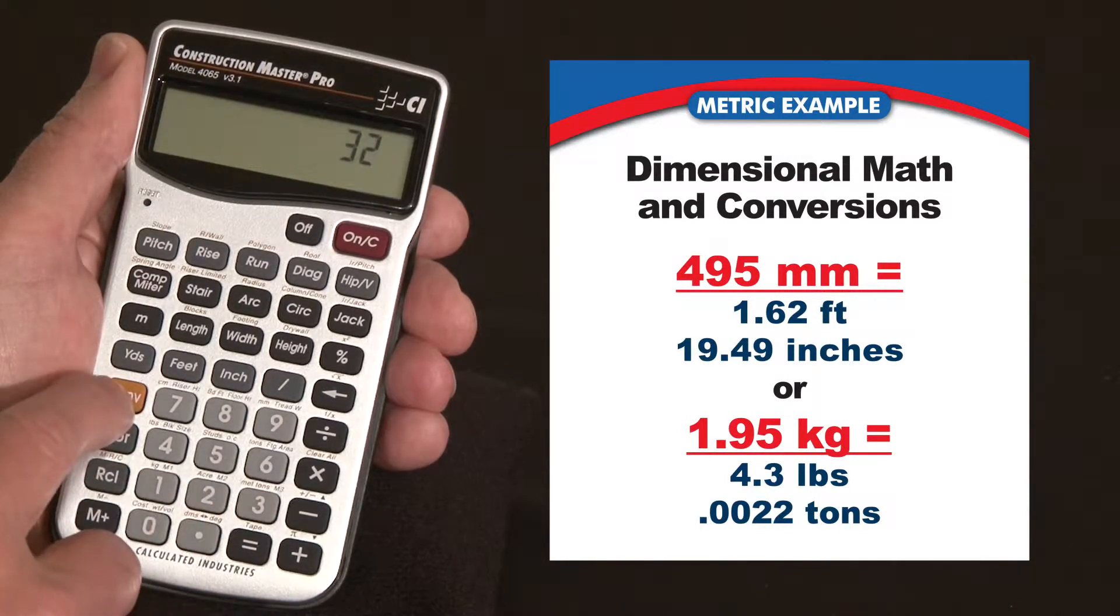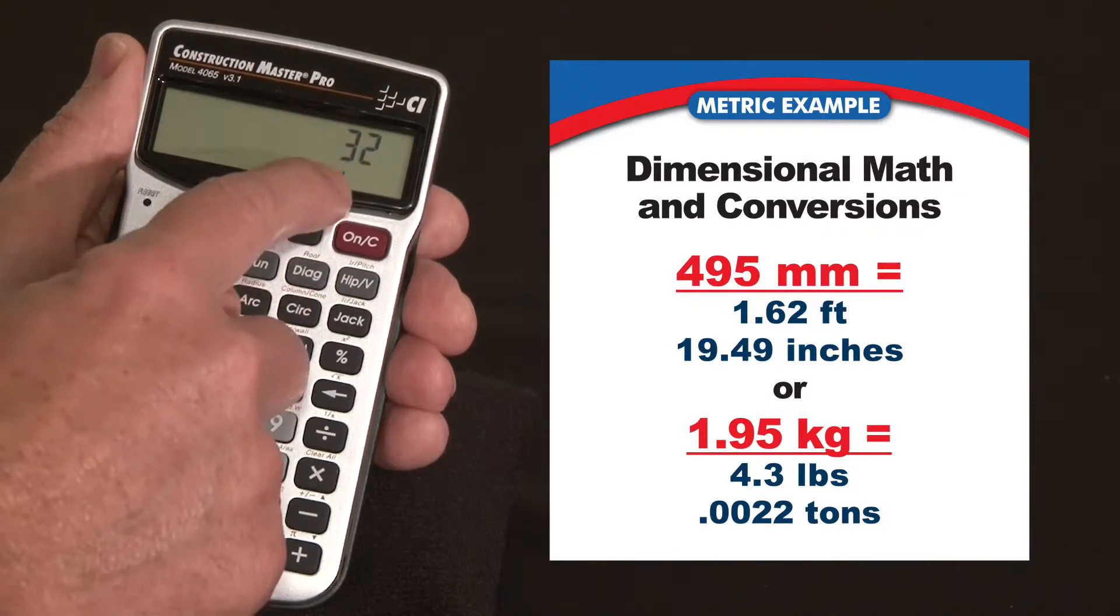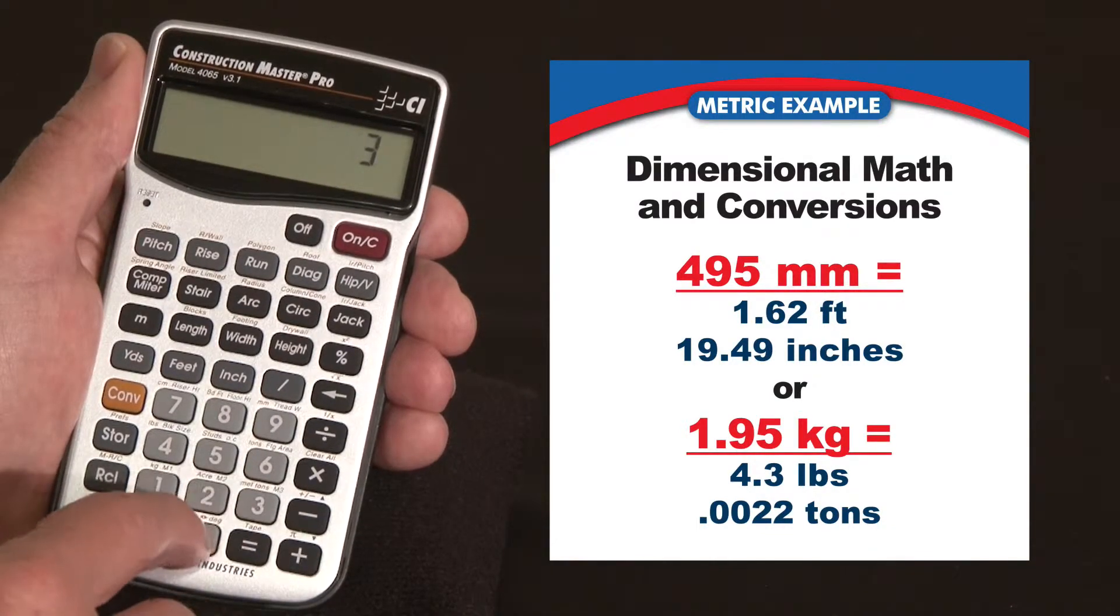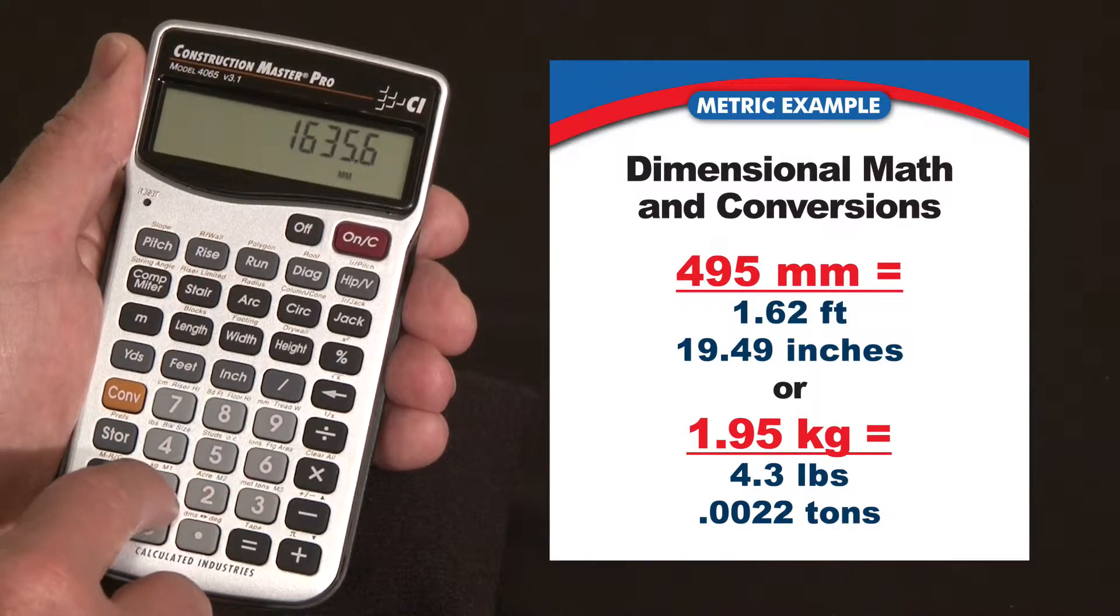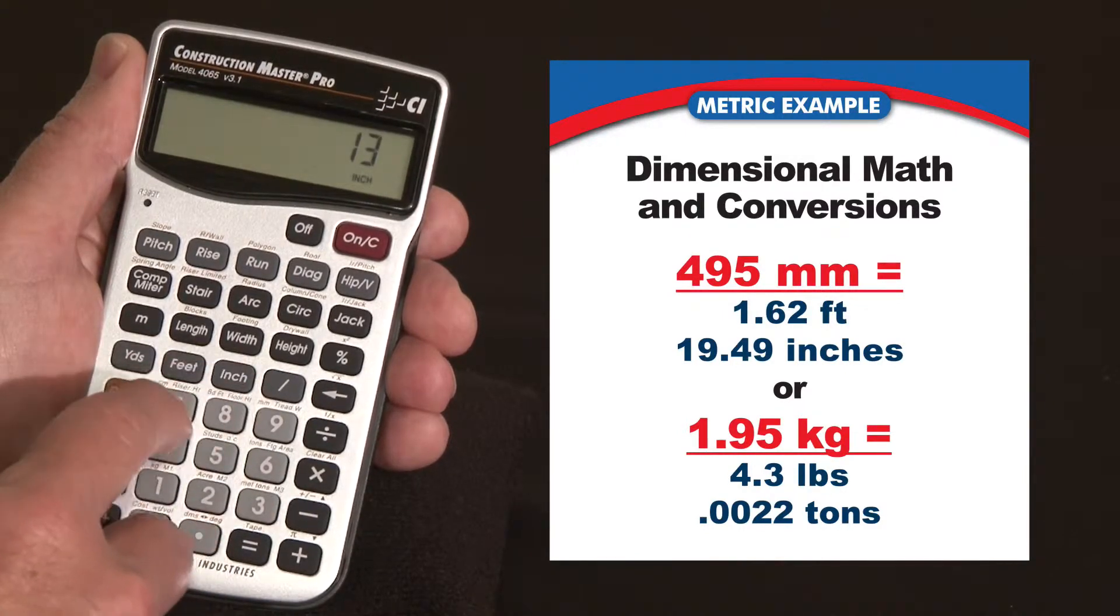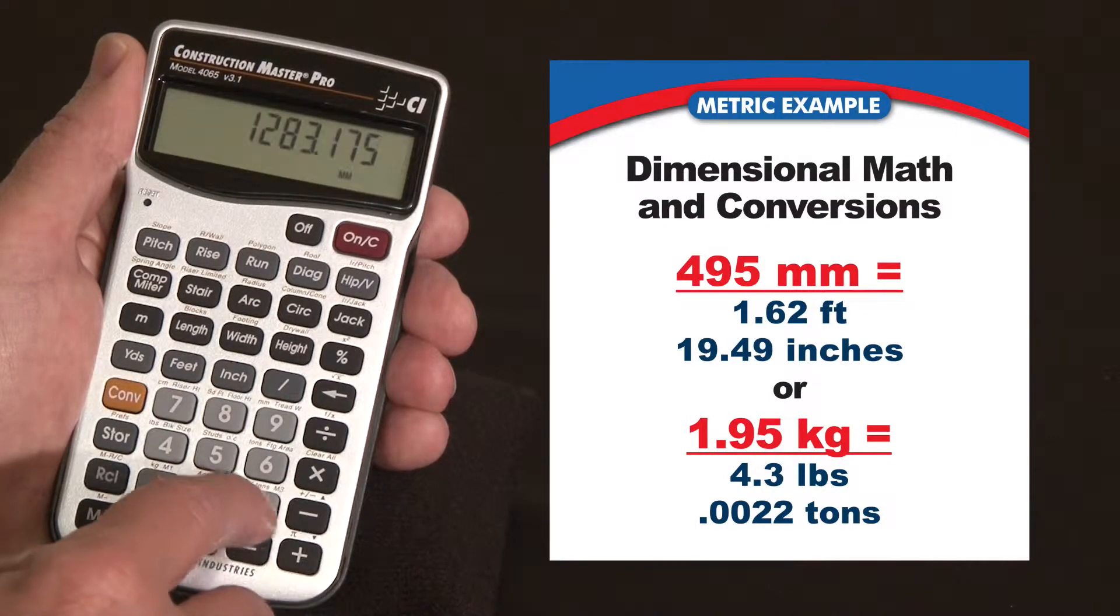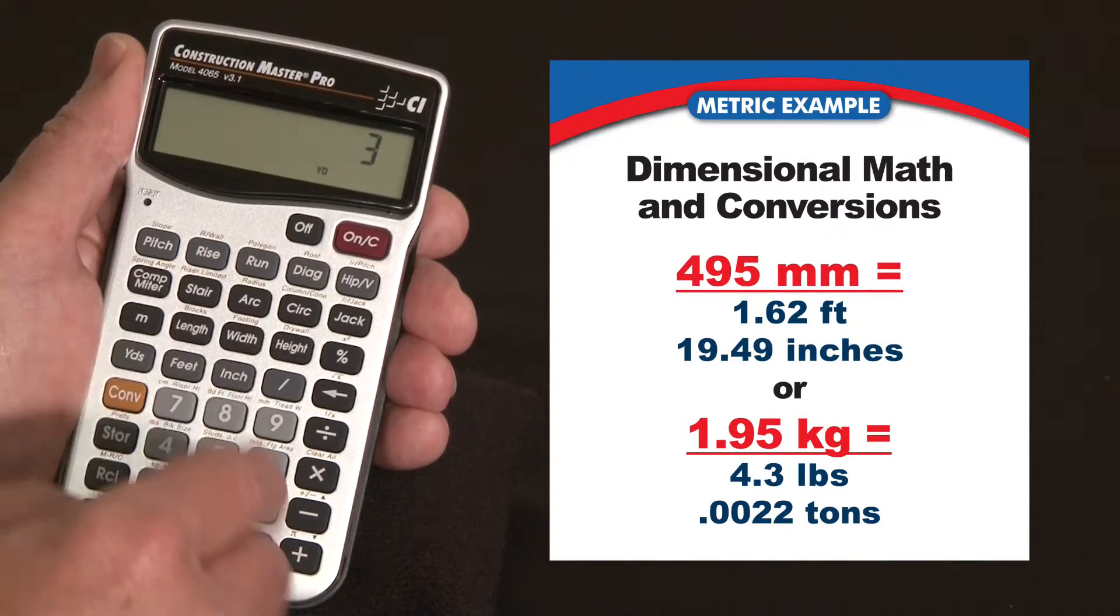Plus 32, if I hit convert 7, that's centimeters, plus 3.25, I can put in feet, minus 13 inches and 7/8s, plus 3 yards. You can mix these all together.